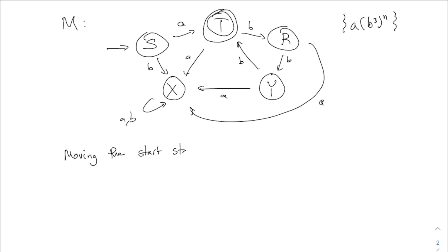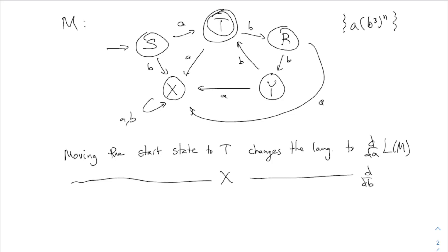Derivatives correspond to moving the start state. If I move the start state to T, that changes the language to the derivative with respect to 'a' of L(M). The original language required strings to start with 'a' and then do that thing with the B's. If you move the starting state to T, they don't have to start with 'a' anymore. That's the same as taking the derivative of that language — you take all strings which originally started with 'a' and remove the 'a' from them.